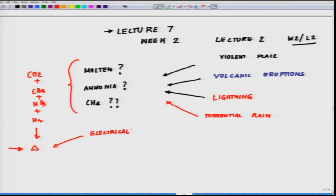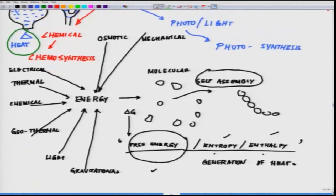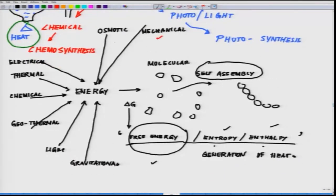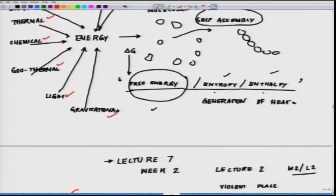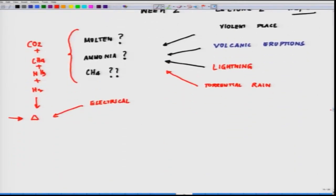Remember, I mentioned or enumerated all the different forms of energies which are available: mechanical, osmotic, electrical, thermal, chemical, geothermal, light, gravitational, and so forth. If you provide all these different kinds of energies and ultraviolet rays, UV is also high energy. If you remember E is equal to H nu.